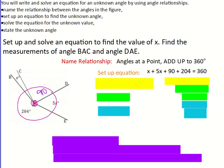From here, my equation is set up. I'm ready to solve it. So I'm going to start by combining like terms. I'm going to combine the x terms. Here you have x plus 5x. Remember, x represents 1x. So 1x plus 5x is 6x. And then for your constants, you have 90 plus 204, which is just 294.